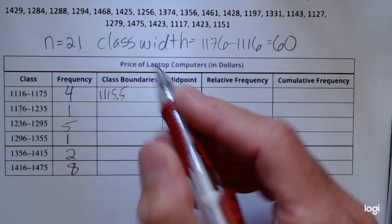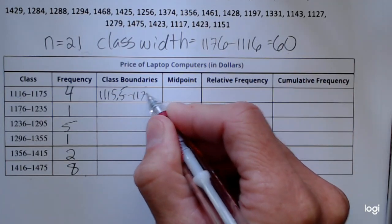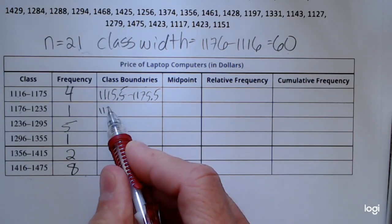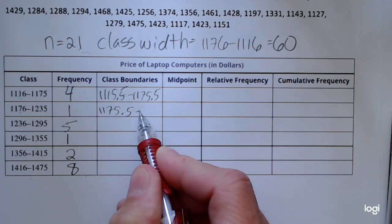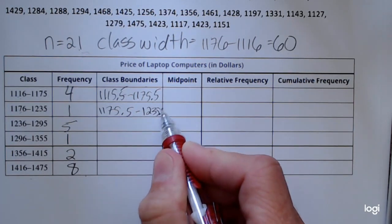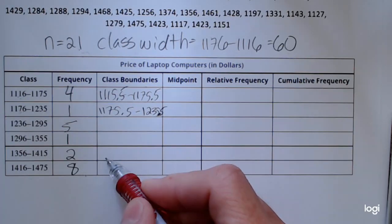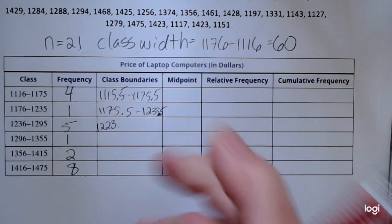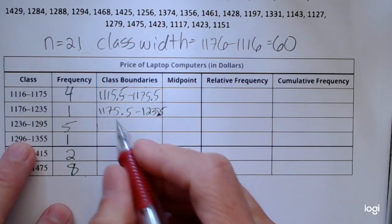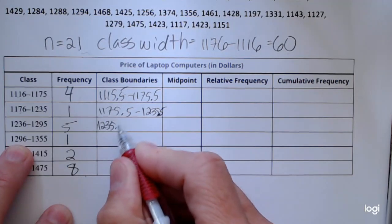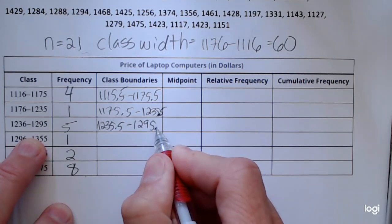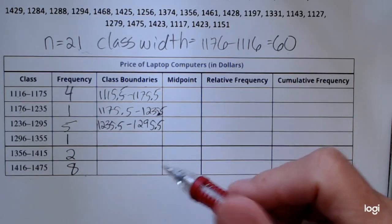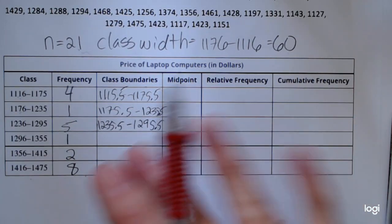So this first lower class boundary will be 1115.5. I just go half a unit down, and then for my upper class boundary I want to add 0.5. So this next one will start at 1175.5 and stop at 1235.5. This upper class boundary now becomes this lower class boundary. 1235.5 up to 1295.5, and so on.